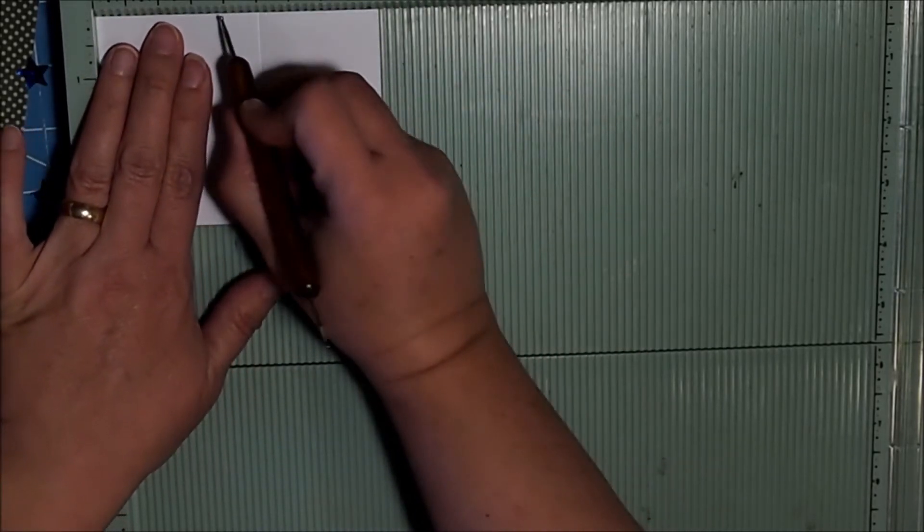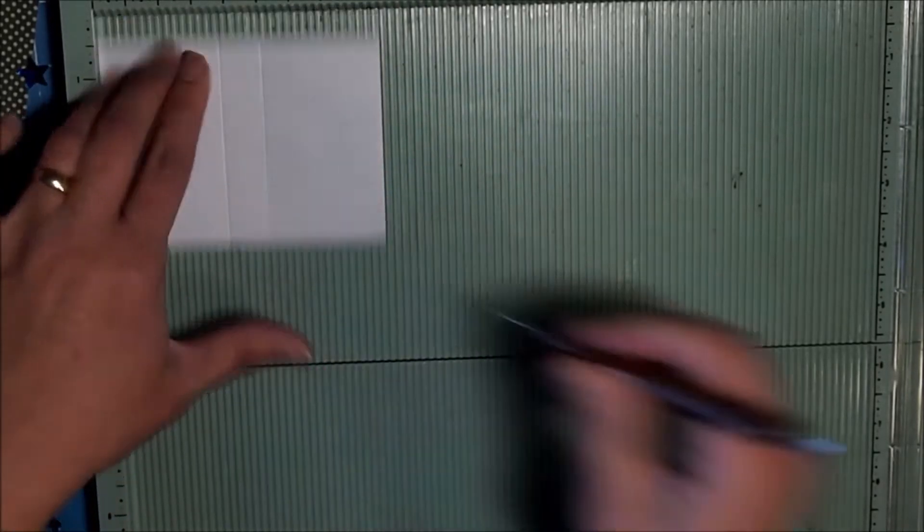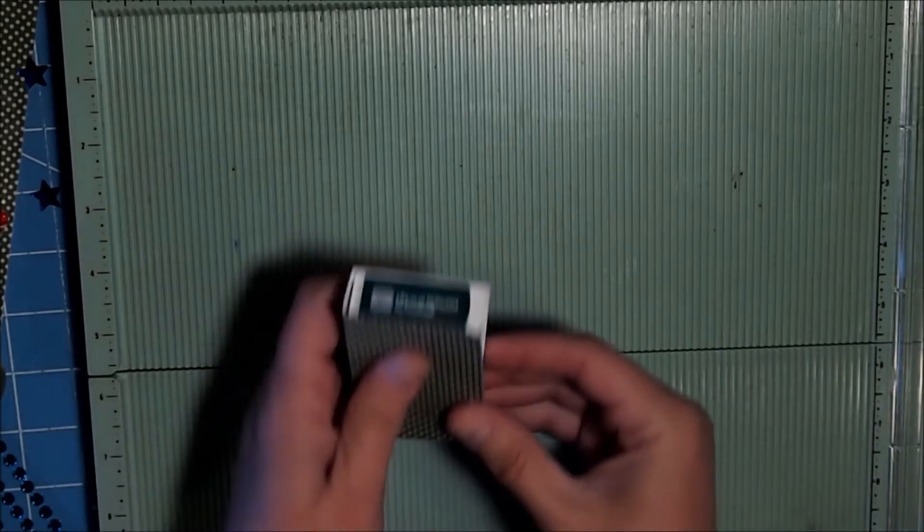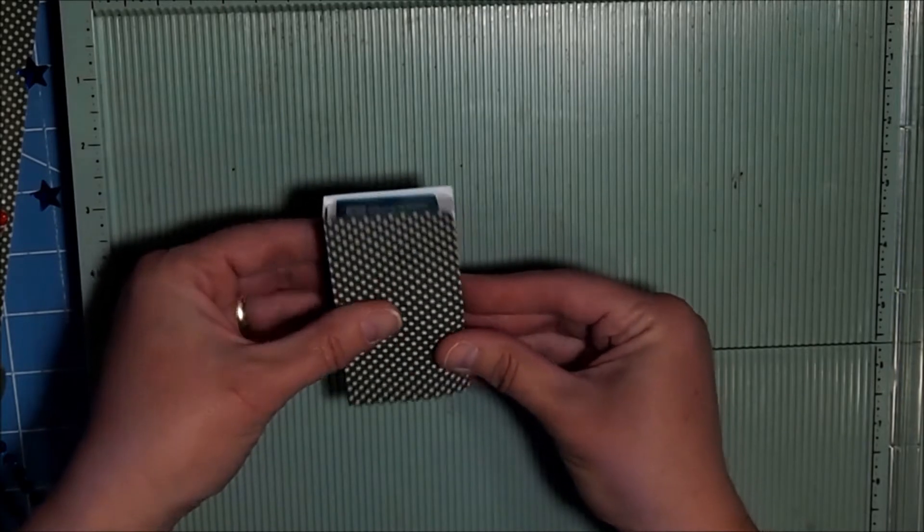And then we're just going to flip it and score it again at one and seven-eighths. That's just how wide my Tic Tacs are. And then when we put it in, we have just a perfect little box for our Tic Tacs.